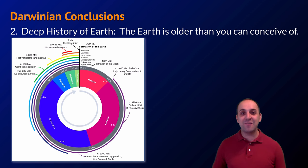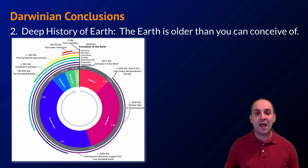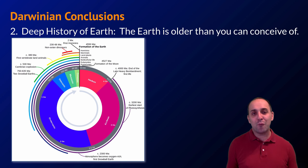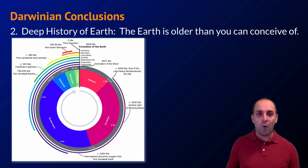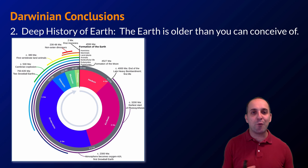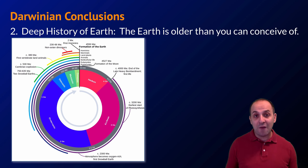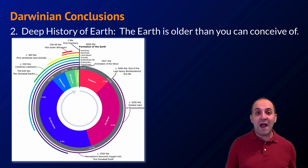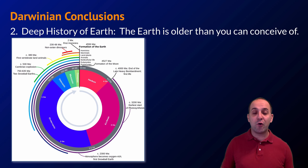The second major conclusion is the deep history of the earth — the notion that the earth is older than you can conceive of. It's around four and a half billion years old, which is an age that our human brains really aren't equipped to grasp. What that really means is that there's been a lot of time for life to evolve from that last universal common ancestor into the wide diversity of modern life that we see today. We'll talk about a lot of that life and how it's organized both over the rest of this unit and throughout this course.